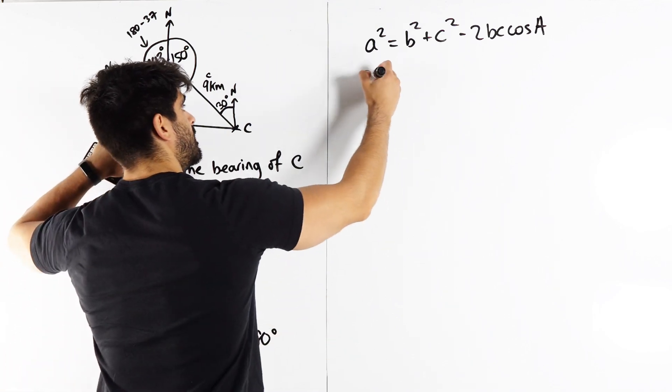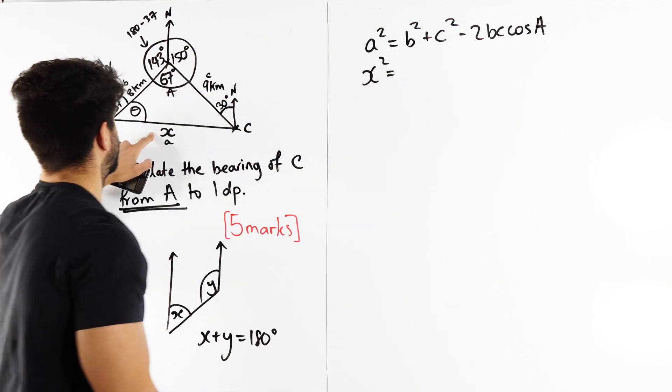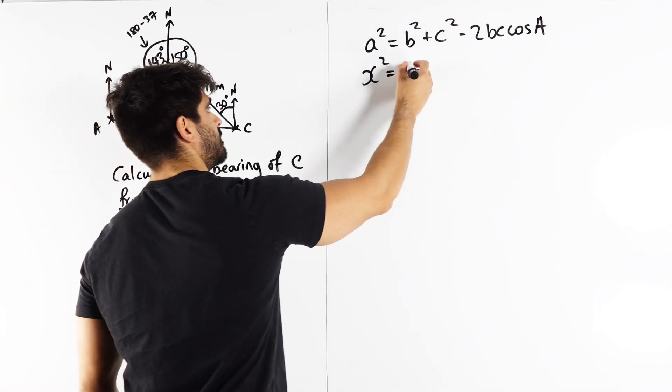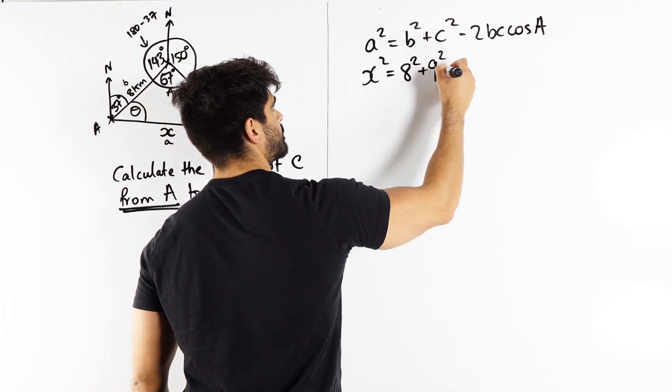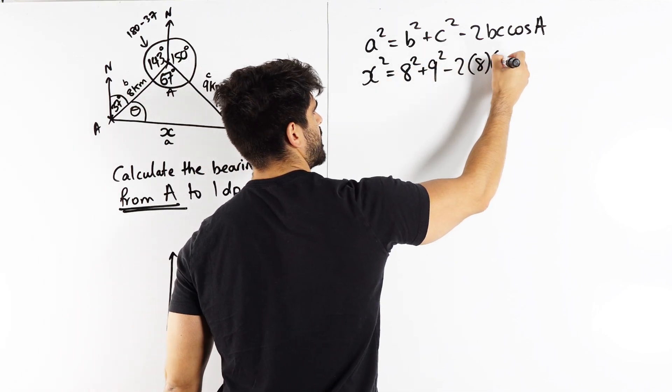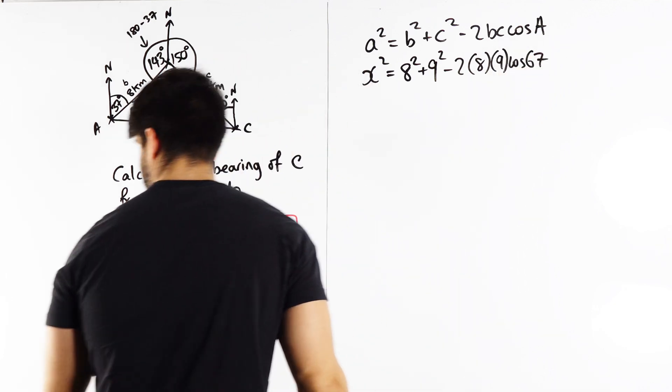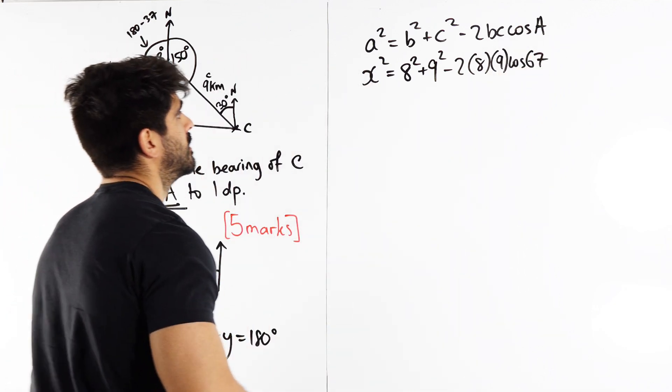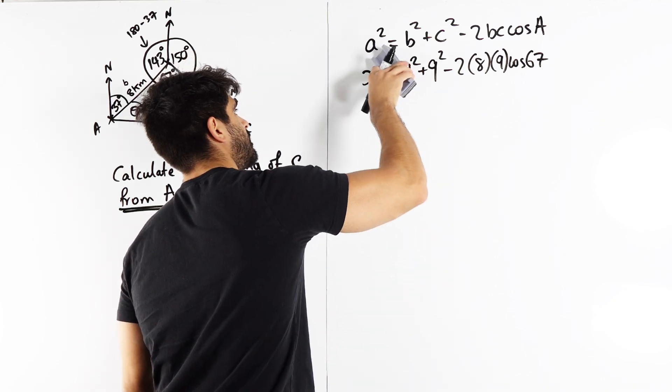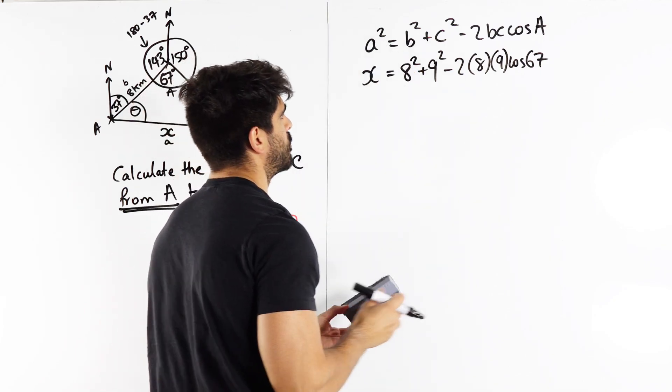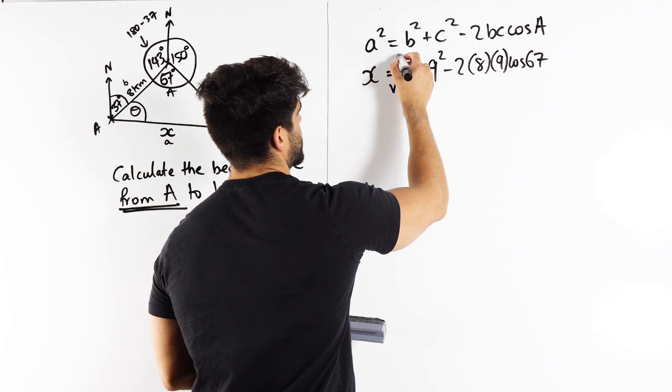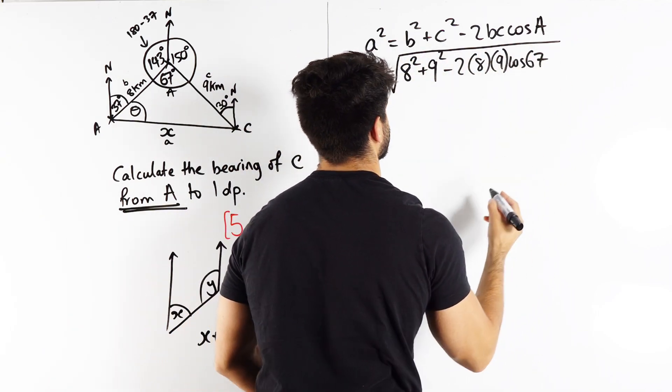So x squared is 8 squared plus 9 squared minus 2 lots of 8 and 9 and cos of 67. Okay? Now, at the same time, what I'm going to do is I'm going to route both sides to find x. Now, if you've been watching me long enough, you'll know exactly what I'm going to be doing with this answer.